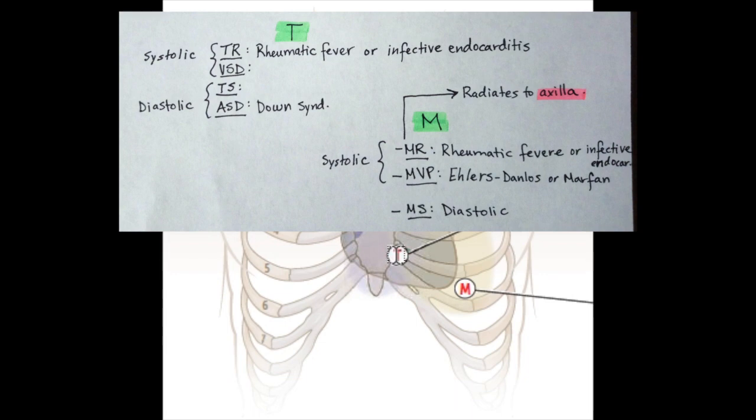And then tricuspid and mitral valve will have both the systolic and diastolic of each pertinent valve, as well as VSD and ASD in the tricuspid area and mitral valve prolapse in the mitral area.